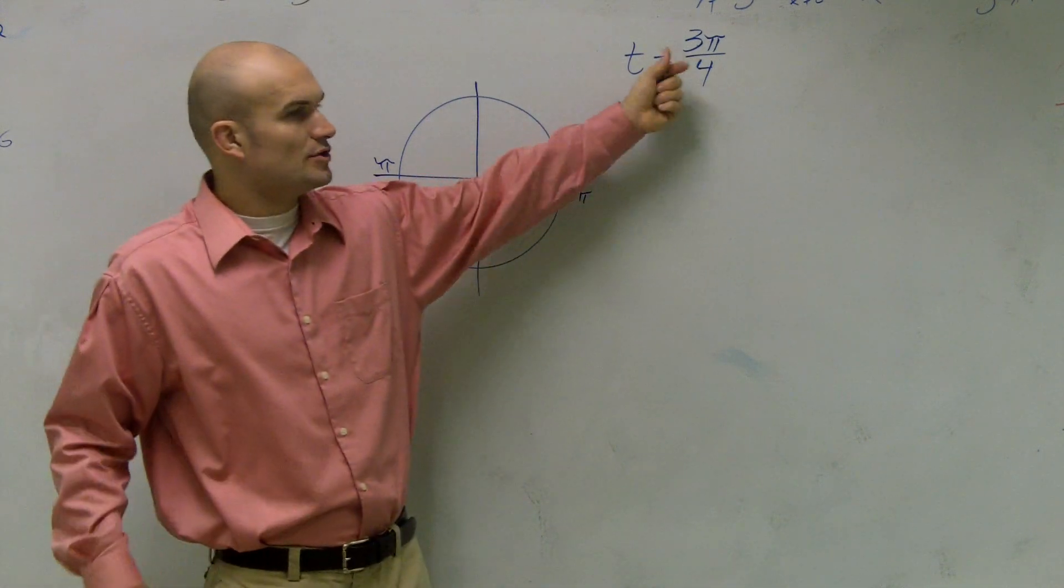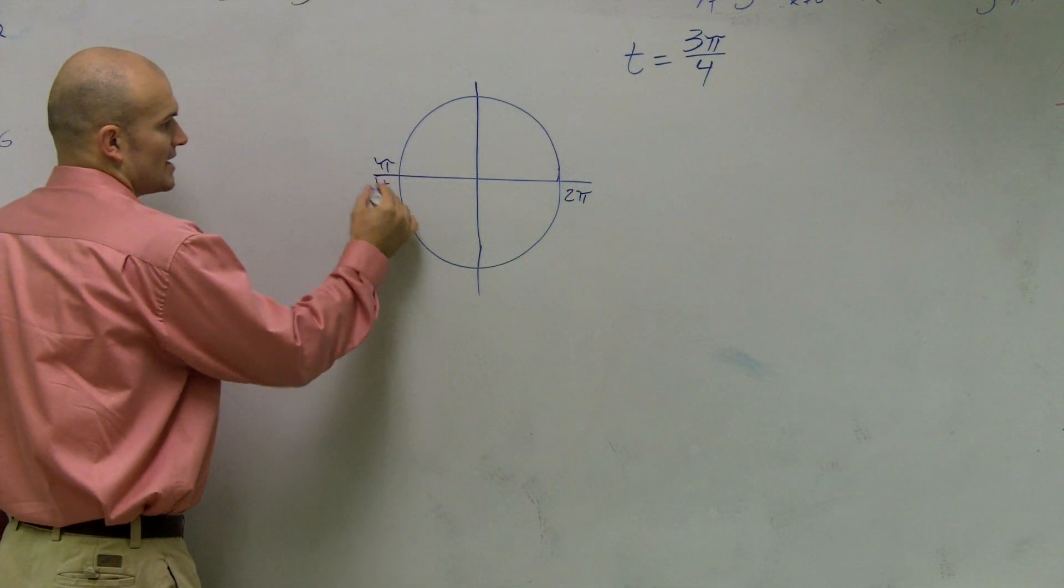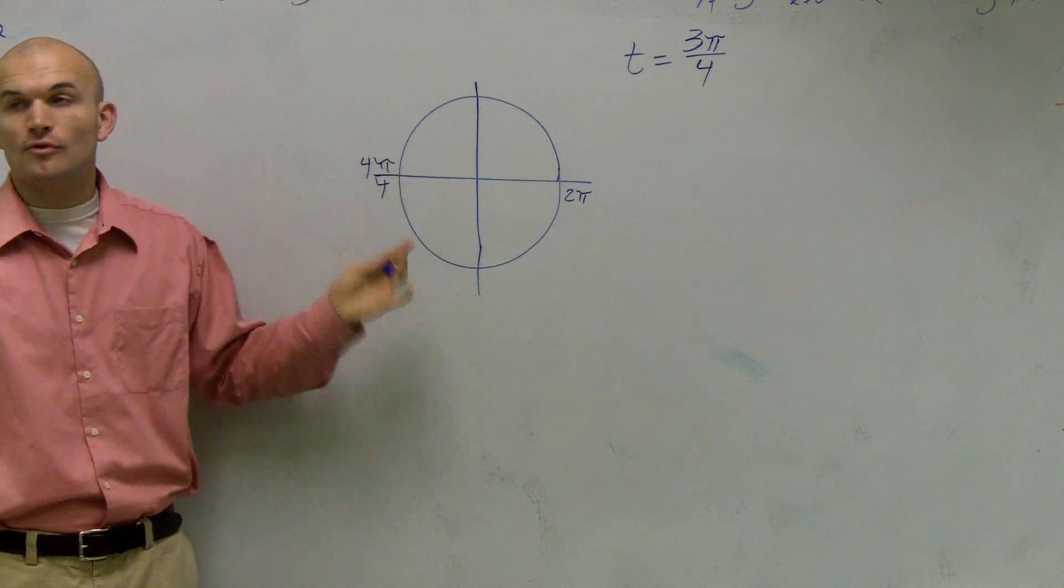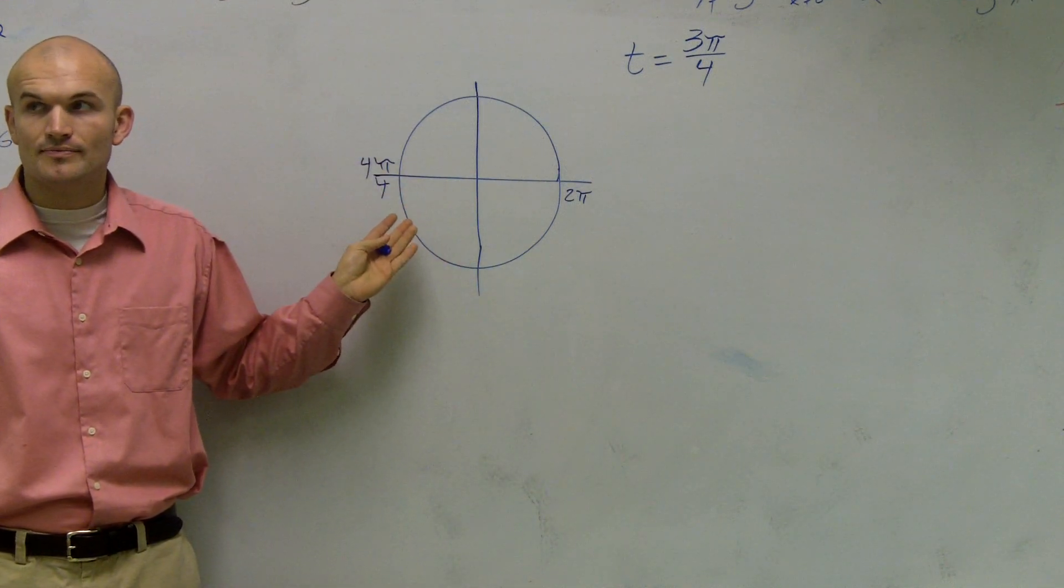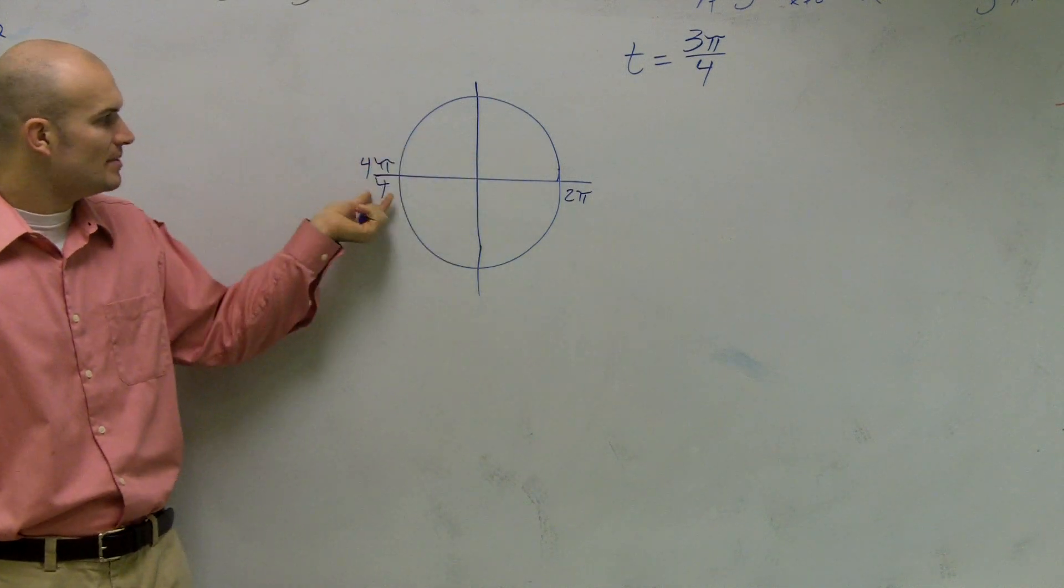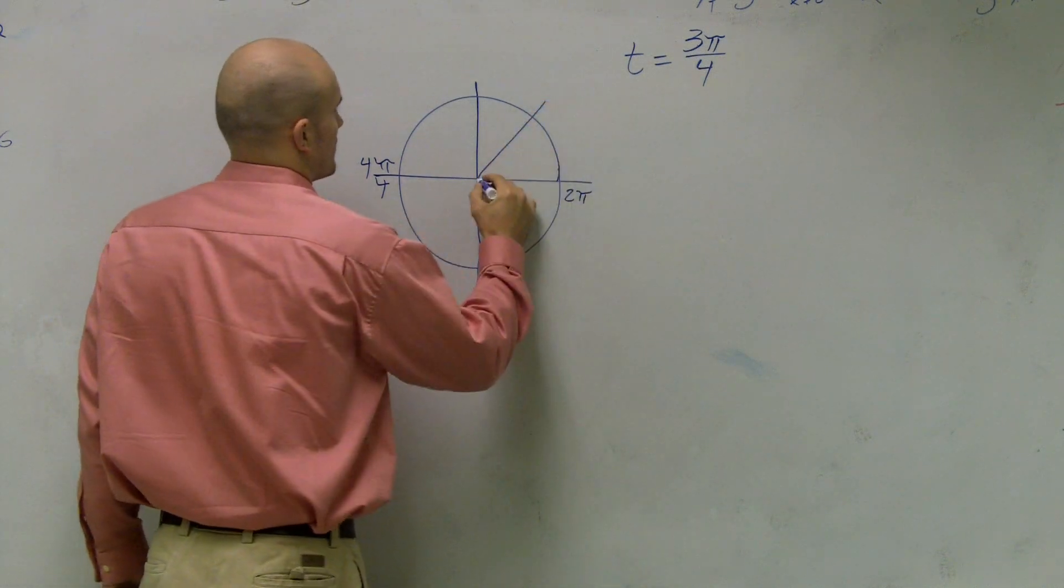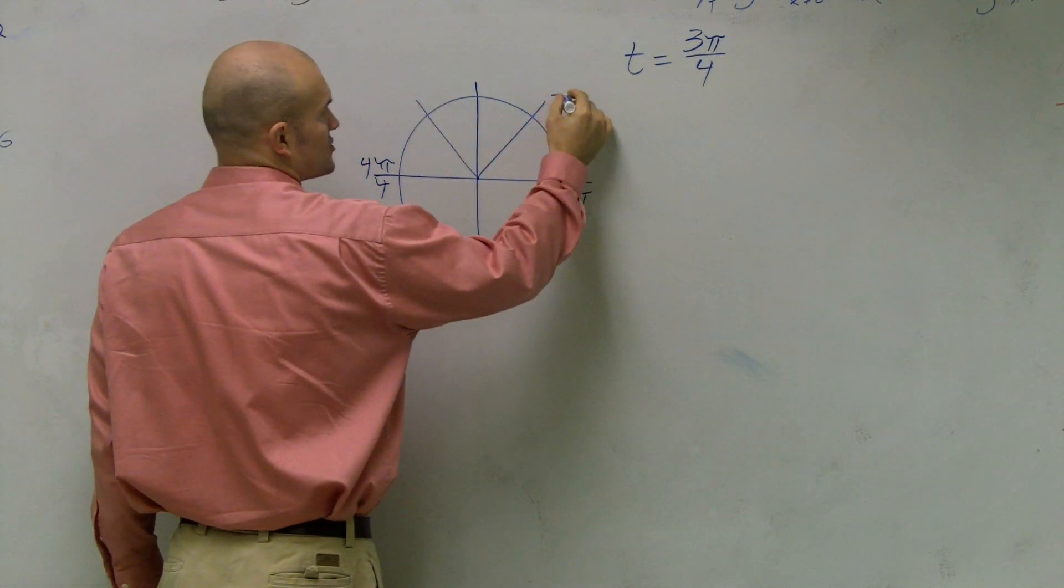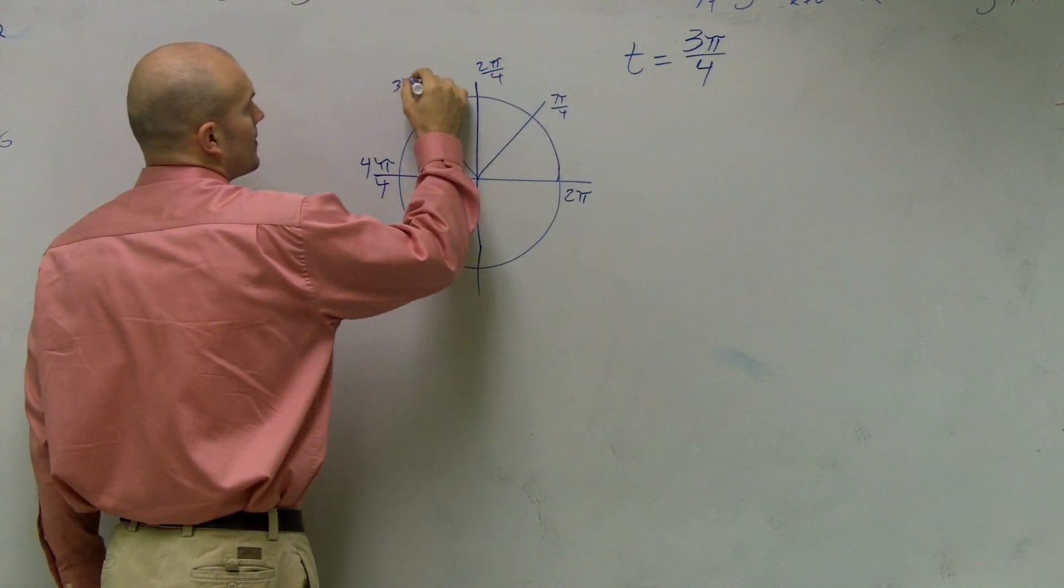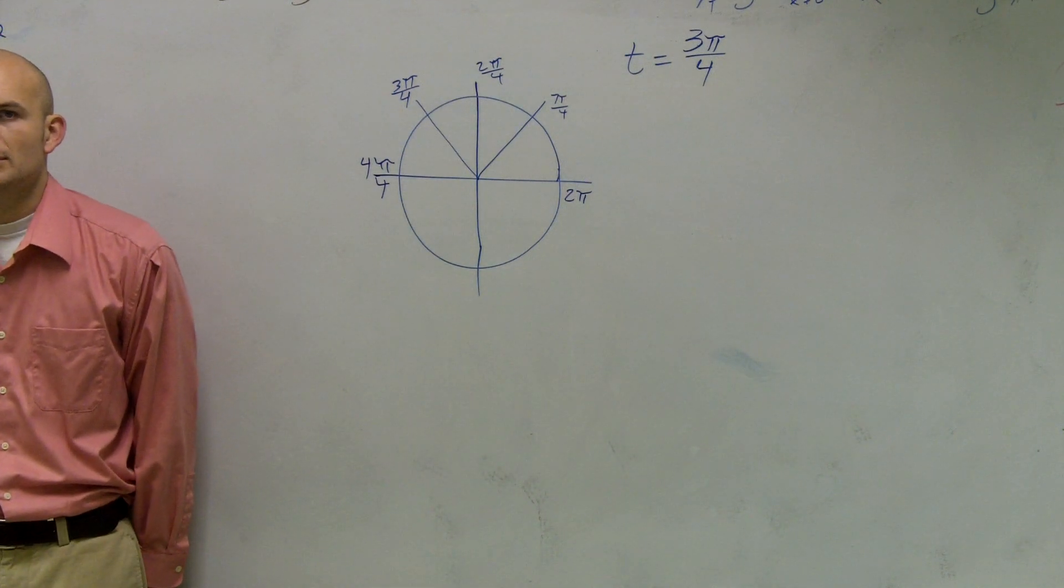Remember what I told you. Whatever your denominator is, I like to rewrite your pi with that denominator. So I can say, instead of writing pi, we can say 4 pi over 4. Obviously, 4 pi over 4 is the exact same thing as pi. Now, what I want to do is, this is broken up into halves. Well, since I'm using my denominator's force, I want to break it up into force. So therefore, this would be pi over 4, 2 pi over 4, 3 pi over 4.